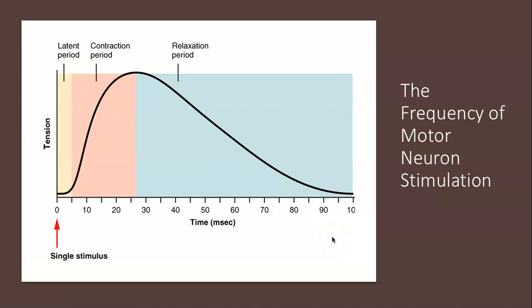Twitches occur in three phases. The first phase is the latent period. During this latent period, the action potential is moving along the sarcolemma and the calcium ions are released from the SR. That's the phase during which excitation and contraction are being coupled, but contraction has yet to occur.